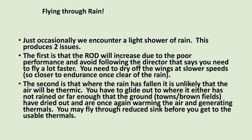Rain, bugs, birds. Flying through rain. Just occasionally we encounter a light shower of rain. This produces two issues. The first is that the rate of descent will increase due to poor performance — and avoid following any directive to fly a lot faster. You need to dry off the wings at slower speeds, closer to endurance once clear of the rain. The second is that where the rain has fallen, it is unlikely that the air will be thermic. You have to glide out to where it either has not rained, or far enough that the ground, towns, and brown fields have dried out and are once again warming the air and generating thermals.